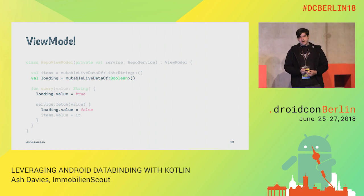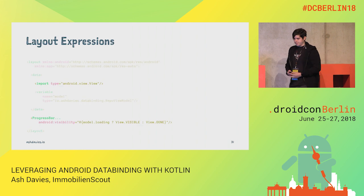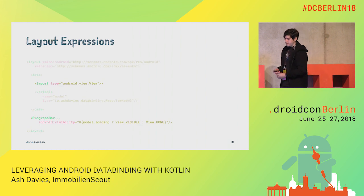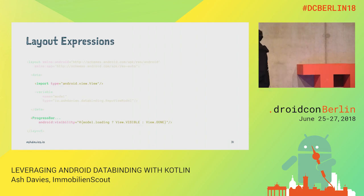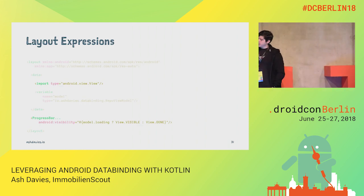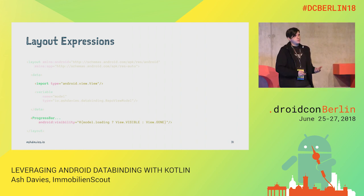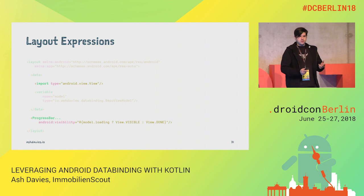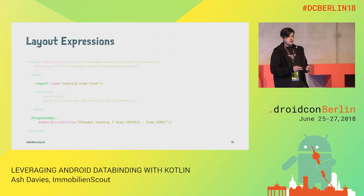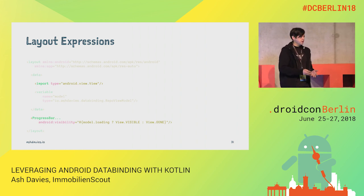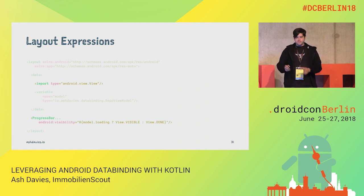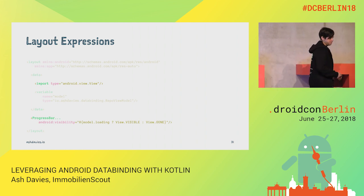In our layout expression, we've got a binding to model.loading, and we want to make sure the view is visible or gone. The problem is we have a Boolean, which is a two-state, whereas we want to map this to a three-state view visibility property. It's fine doing it like this for now, but we can see how to improve it.